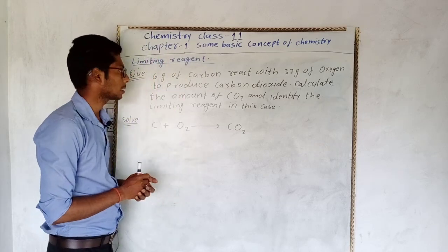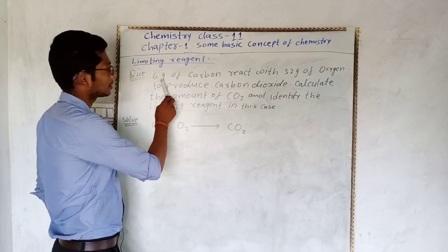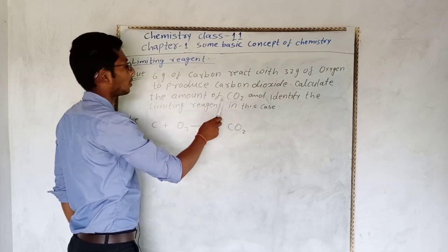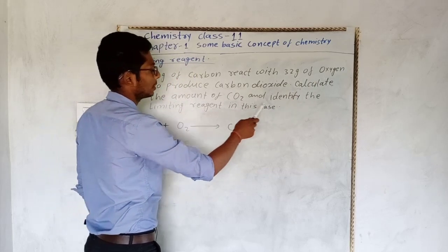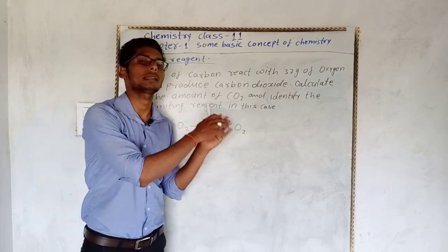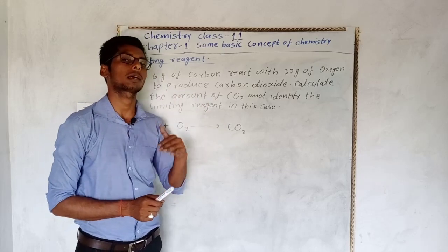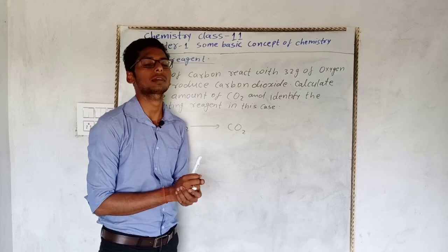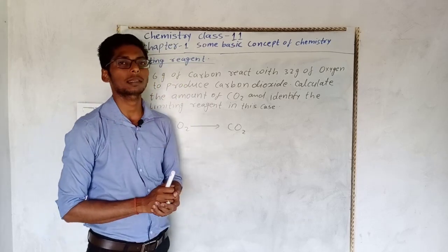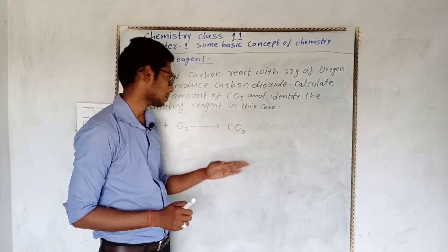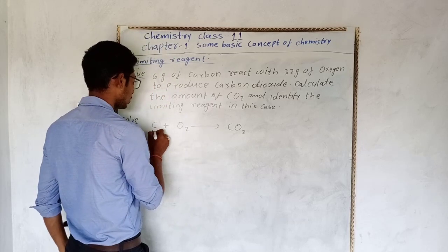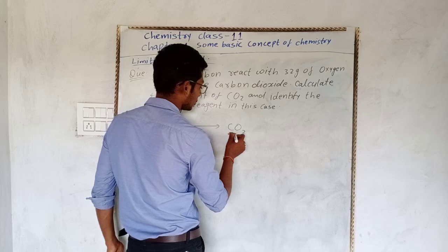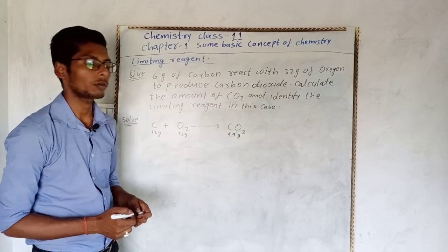Next question: 6 gram of carbon reacts with 32 gram of oxygen to produce carbon dioxide. Calculate the amount of carbon dioxide and identify the limiting reagent. POAC apply करेंगे, reaction balance करते हैं: C + O2 → CO2। यह reaction already balanced है। Carbon: 1 mole = 12 gram, oxygen: 1 mole = 32 gram, CO2: 1 mole = 44 gram। Law of conservation of mass follow हो रहा है।